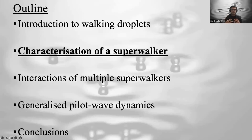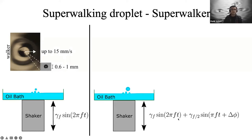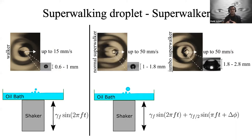Now let me introduce superwalking droplets. Single frequency driving gives rise to walking droplets about half a millimeter to a millimeter in diameter, walking at approximately 15 millimeters per second. We found that if you drive the bath at two frequencies — frequency f and half of that — along with a phase difference, this two-frequency driving enables walking for bigger droplets that were unable to walk at single frequency. These superwalkers are around double the size of walkers and can walk two to three times faster.